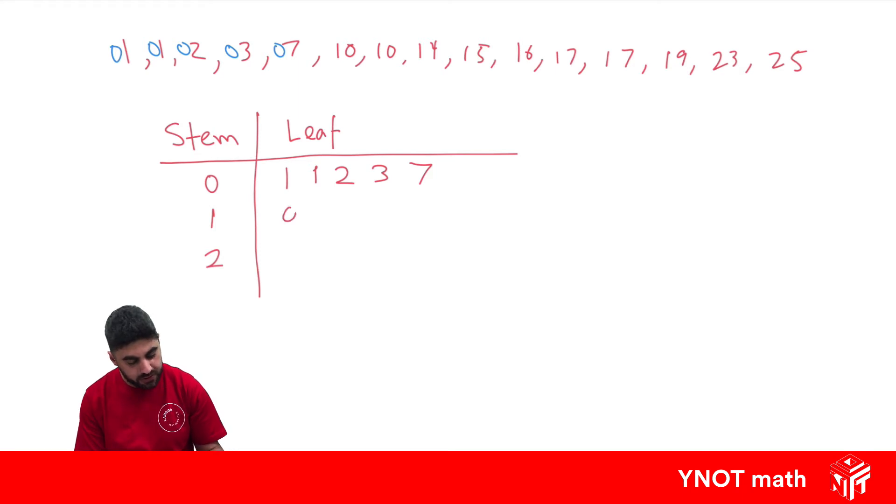So 01, 01, 02, 03, 07. Now we're up to our digit starting with one: 10, 10, 14, 15, 16, 17, 17, 19. Now we're up to our digit starting with two: 23 and 25, or twenty-three and twenty-five.